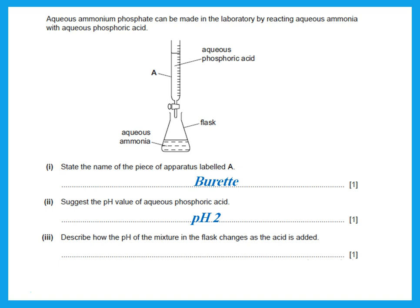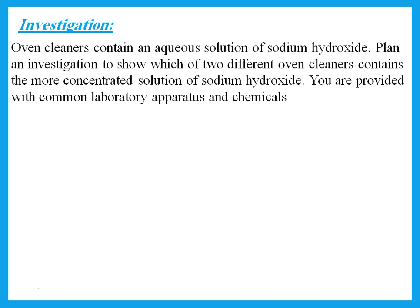Describe how the pH of the mixture in the flask changes as the acid is added. The flask contains aqueous ammonia, which is around pH 8 or 9. As acid with pH 2 is added, the pH in the solution will start to decrease until it reaches the neutral pH of 7.